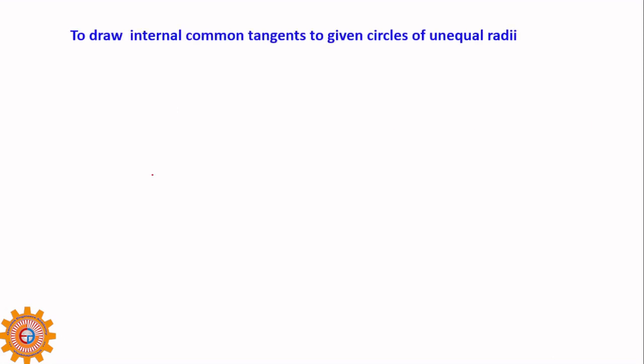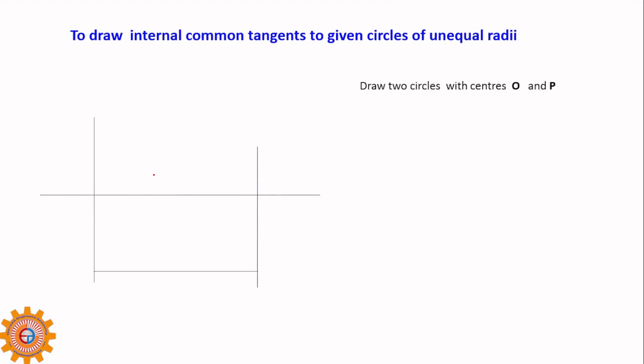The next task is to draw internal common tangents to circles of unequal radii. This example can also be used for drawing belts on pulleys of different radii. First draw the two vertical lines giving the center distance, and draw two circles with different radii. Maintain the specified center distance between the two circles.